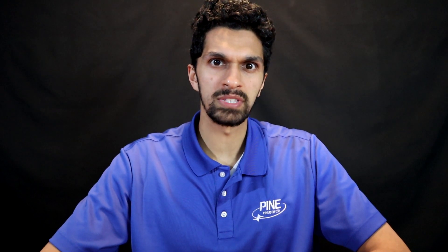So now that we understand the equation, let's take a look at some rotating disk electrode data. So I have my rotating disk electrode data. This is the rotation rate, and this is the limiting current. Rotation rate is in rpm, and limiting current is in microamps.